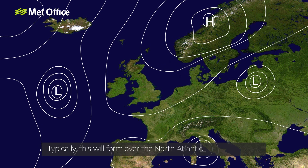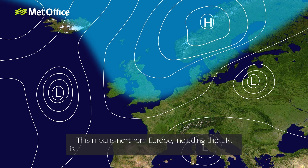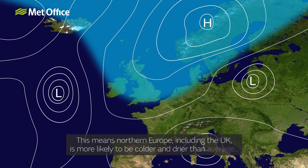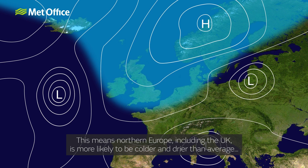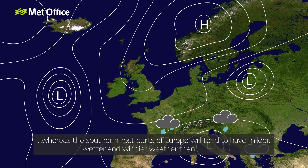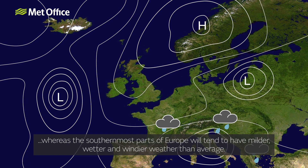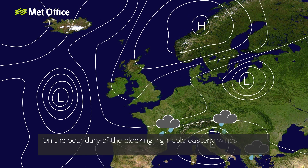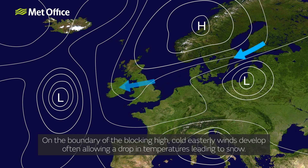Typically this will form over the North Atlantic and Scandinavia. This means Northern Europe, including the UK, is more likely to be colder and drier than average. Whereas the southernmost parts of Europe will tend to have milder, wetter and windier weather than average. On the boundary of the blocking high, cold easterly winds develop, often allowing a drop in temperatures leading to snow.